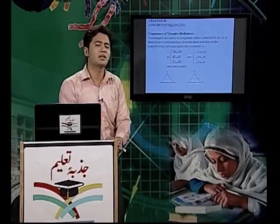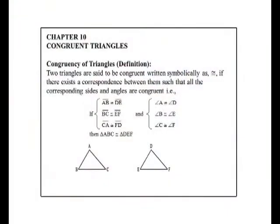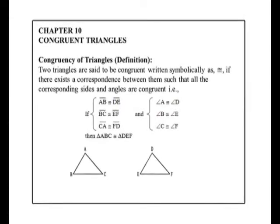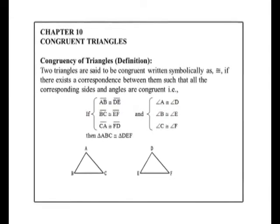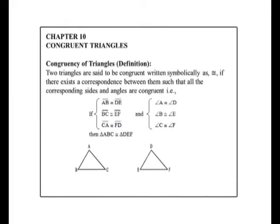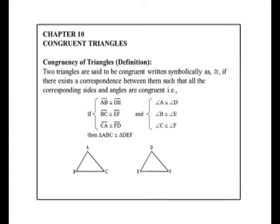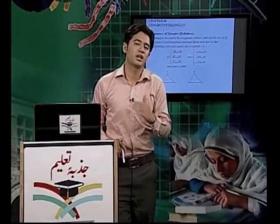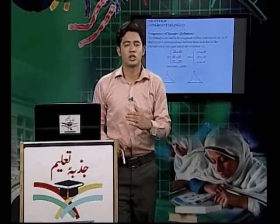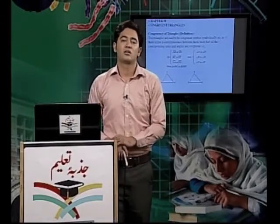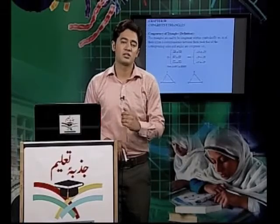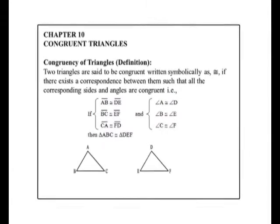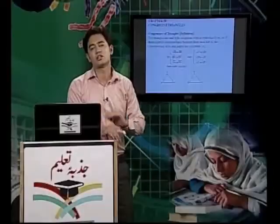اب ہم ان کے angles دیکھتے ہیں۔ Angle A equal ہے angle D کے، angle B equal ہے angle E کے، اور angle C equal ہے angle F کے۔ مطلب کہ جب ہم نے دو triangles کو study کیا تو ان کی sides اور angles آپس میں congruent ہیں۔ اس facts کی بنیاد پہ ہم کہہ سکتے ہیں کہ دونوں triangles آپس میں congruent ہیں۔